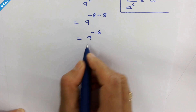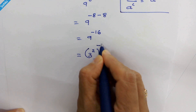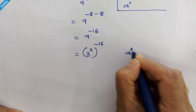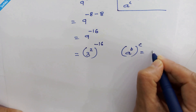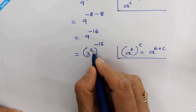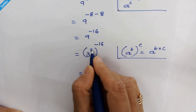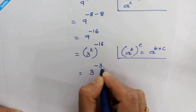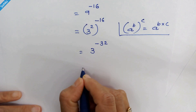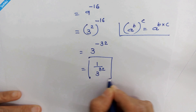Now 9 is 3 squared, so we can write it as 3 squared whole raise to minus 16. Now let's recall this rule: where a raise to b, whole raise to c, then it will be a raise to b times c. According to this rule we can multiply 2 and minus 16. So 3 raise to 2 times minus 16 is minus 32. Now 3 raise to minus 32 can be written as 1 upon 3 raise to 32, which is our answer.